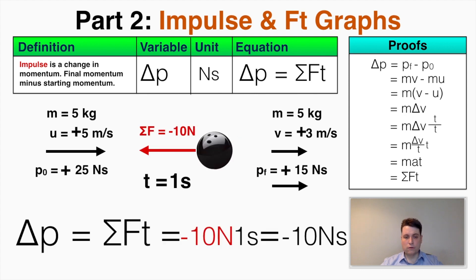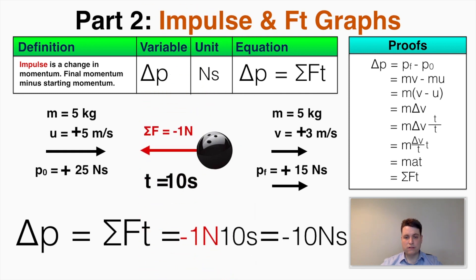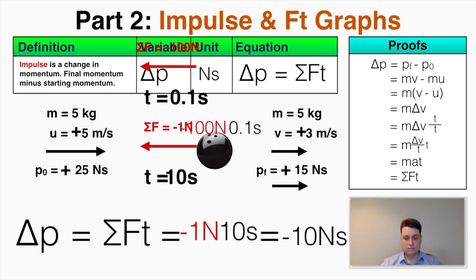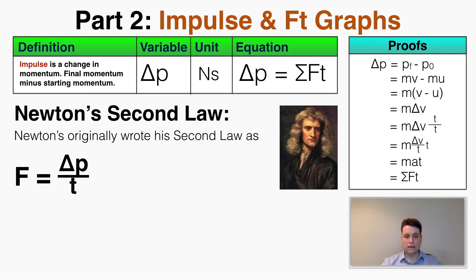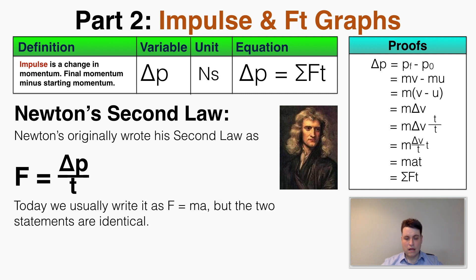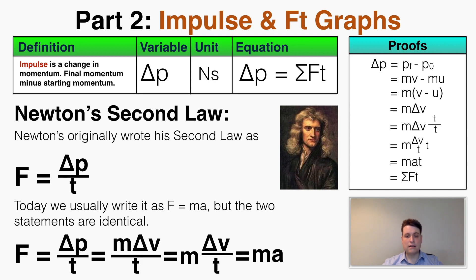The same impulse can occur with different force and time combinations. A force of negative 10 Newtons for 1 second, or negative 1 Newton for 10 seconds, each produce the same total impulse of negative 10 Newton seconds and the same final velocity of 3 m/s. Multiple forces and times can combine to make the same total impulse. This is actually how Newton originally wrote his second law: force equals change in momentum over time. Multiplying both sides by time gives force times time equals change in momentum — identical to F = ma.